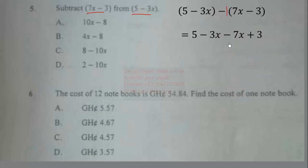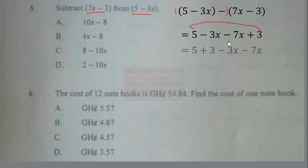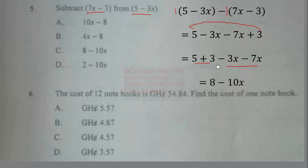Expanding: −1 × 7x = −7x, and −1 × (−3) = +3. The full expression becomes 5 − 3x − 7x + 3. Grouping like terms: (5 + 3) + (−3x − 7x) = 8 − 10x. The correct answer is 8 − 10x.